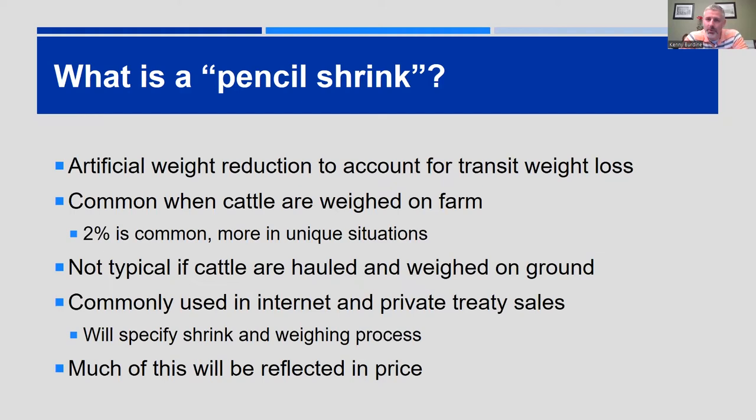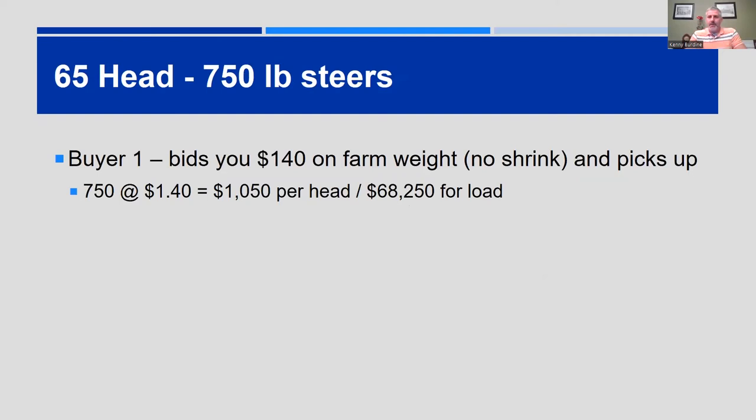Sometimes people overthink shrink. Understand that it gets built into the price: if I weigh cattle on the farm with no pencil shrink, I have more pounds, but bidders through internet sale or private treaty will bid lower knowing those cattle have more gut fill than some that were delivered elsewhere. Here's a quick example: three buyers come to the farm. Buyer number one bids $1.40 on farm weight, no shrink, and will pick them up. The cattle weigh an estimated 750 pounds.